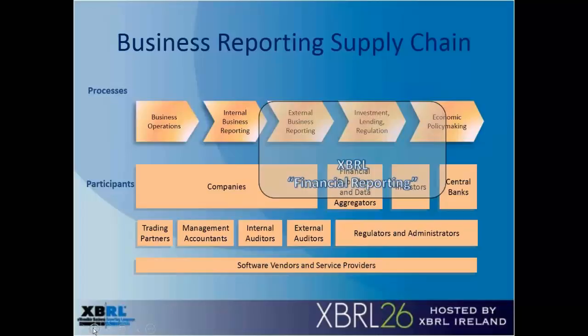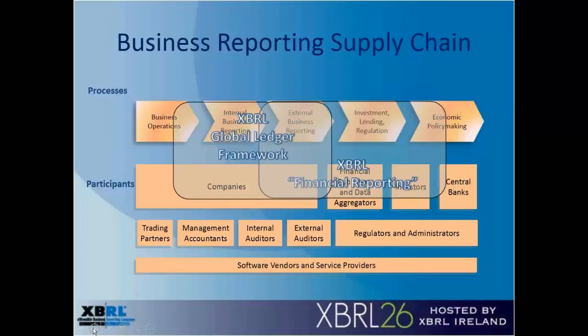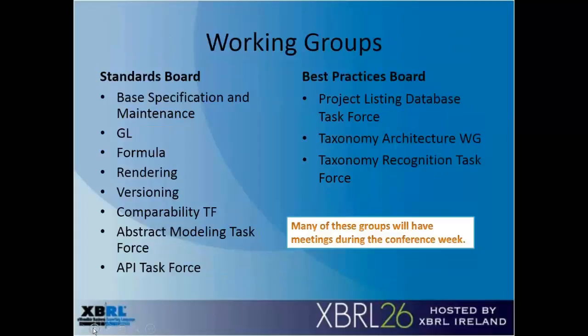As we move to that world of being able to share information from first transaction or business event to the end report, we also have something called the XBRL Global Ledger Framework. This is the XBRL for the detailed data representing ERP qualitative and quantitative information. So the one Global Ledger and the many taxonomies for financial and other reporting come together to represent, integrate, and bring together the business reporting supply chain.